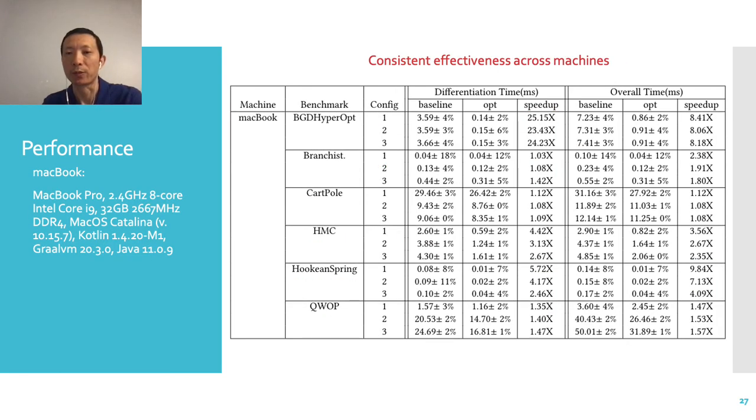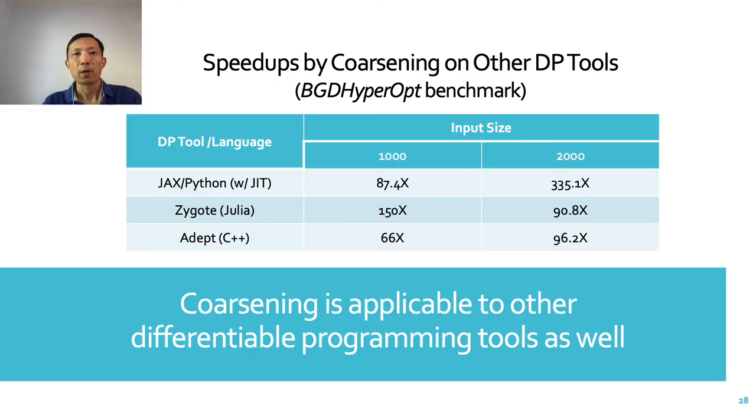Similar speedups are observed on another machine, which is a MacBook Pro, which demonstrates the consistent effectiveness of Coarsening across machines. Coarsening can be applied to other differentiable programming frameworks as well. When we applied the Coarsening results to BGD Hyperopt benchmark written in these three DP tools, we saw 66 to 355 times speedups, even more pronounced than on Zygote.